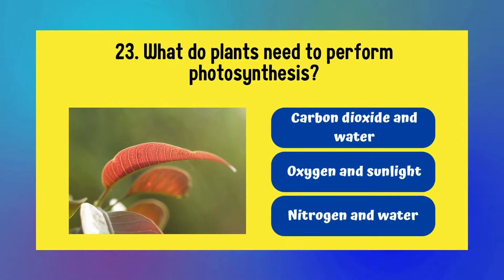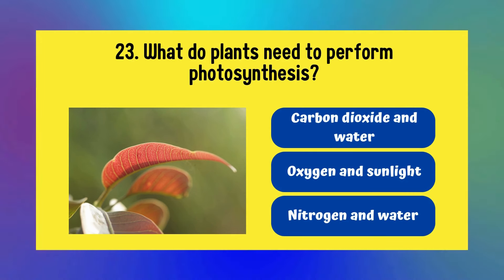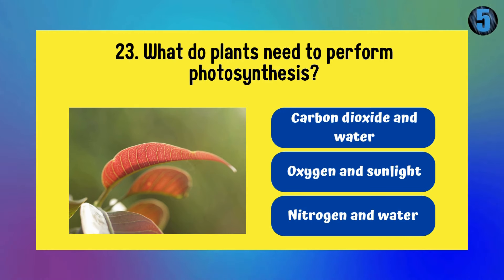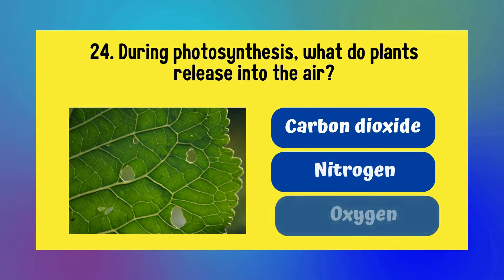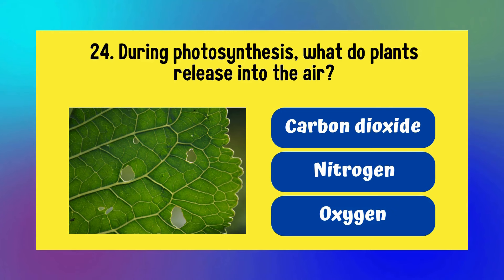What do plants need to perform photosynthesis? Carbon dioxide and water, oxygen and sunlight, or nitrogen and water? It is carbon dioxide and water. During photosynthesis, what do plants release into the air? Carbon dioxide, nitrogen, or oxygen? Answer is oxygen.